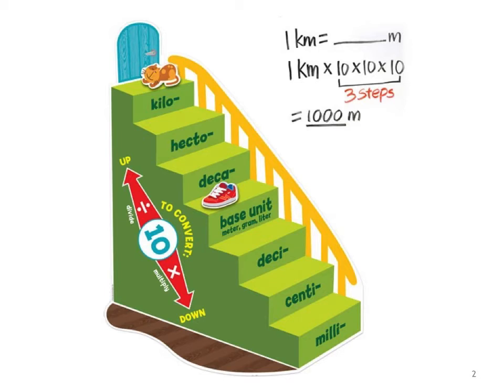If we look at this conversion table, right in the middle where the sneaker is, it says base unit — gram, meter, liter. All you have to do is multiply or divide by 10 as you go down the steps. Imagine the sneaker goes down the steps as one meter. Going down: one meter is 10 decimeters, times 10 again is 100 centimeters, and times 10 again is 1,000 millimeters. Each time we go down a step, we multiply by 10.